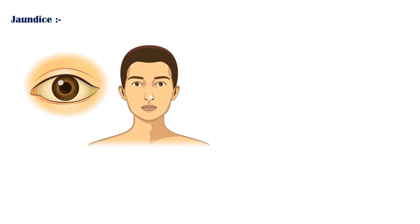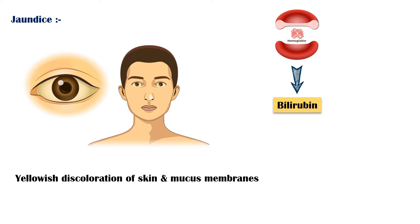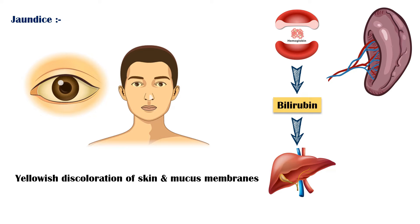Jaundice is the yellowish discoloration of skin and mucous membranes. The main substance responsible for this discoloration is bilirubin. Bilirubin is a waste product of hemoglobin breakdown, which takes place within the spleen. This bilirubin is taken up by the liver, and it modifies it to form conjugated bilirubin, which is then excreted in bile.